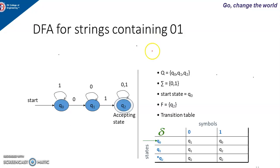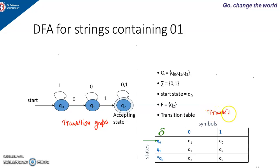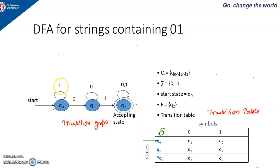Pictorial representation of a finite automata is called transition graph, and a tabular representation of a finite automata is called a transition table. Here in the transition graph, there are three states Q0, Q1, and Q2. Q0 is the start state, Q2 is the accepting or final state, Q1 is the intermediate state, and there are two input alphabets: 0 and 1.